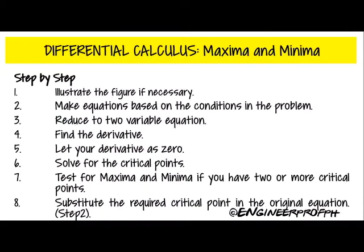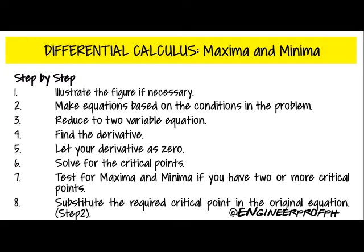The first step in solving the applications of maxima and minima is to illustrate the figure based on your problem. The second step is to make an equation using the conditions in the problem. You may have two or more equations depending on your problem. The third step is to reduce your equation into a two-variable equation.